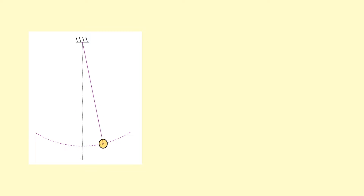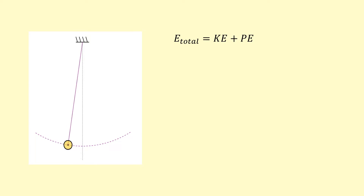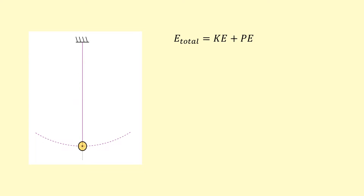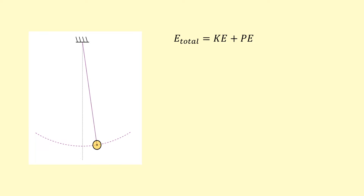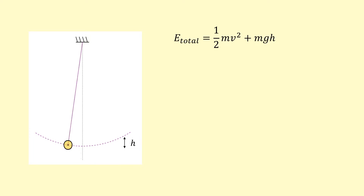In this video we're going to try to calculate the energy of the simple atomic oscillator. In this pendulum, the total energy is made up of kinetic energy and potential energy at any point. The potential energy is gravitational potential energy because the height is changing. Kinetic energy can be written as ½mv² and the potential energy is mgh, where h is the height and v is the velocity at that point.